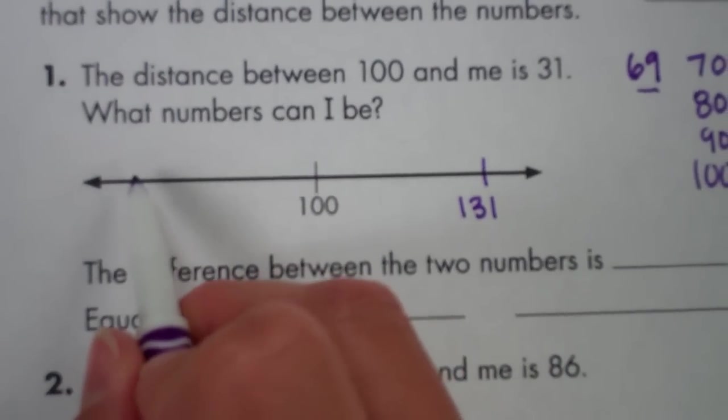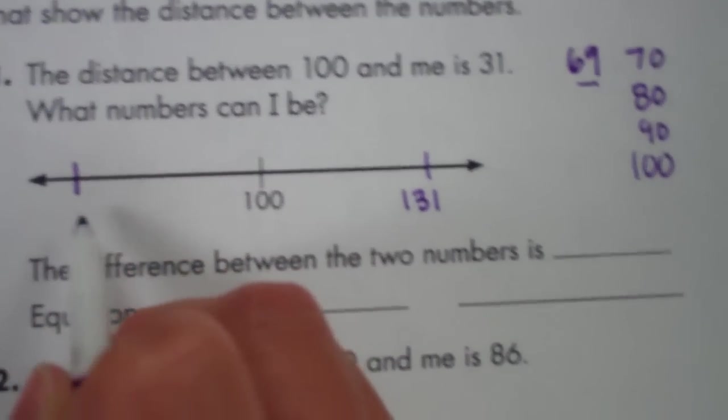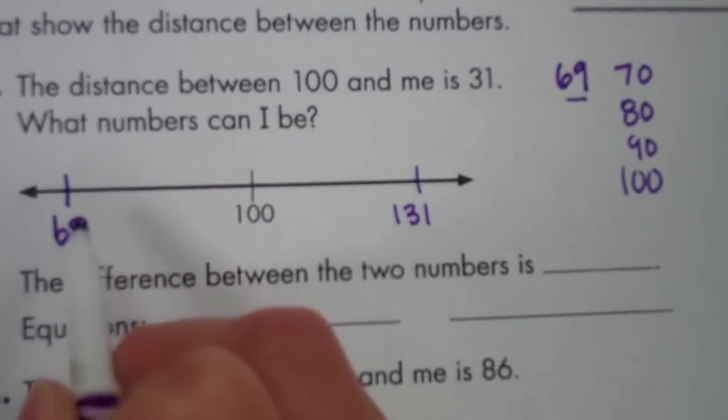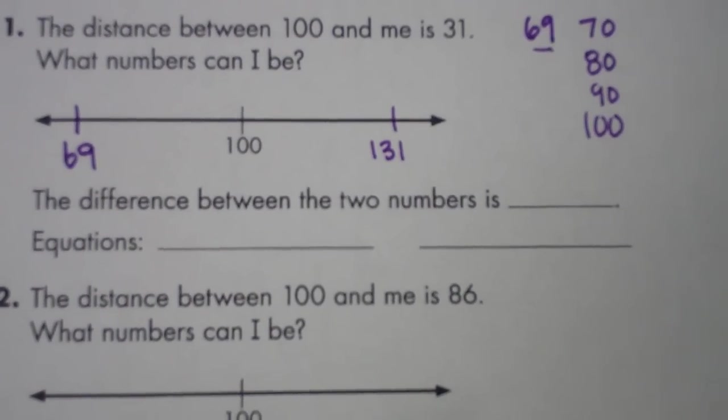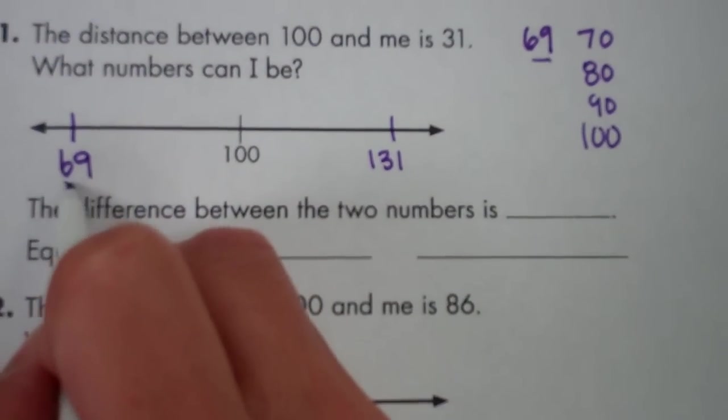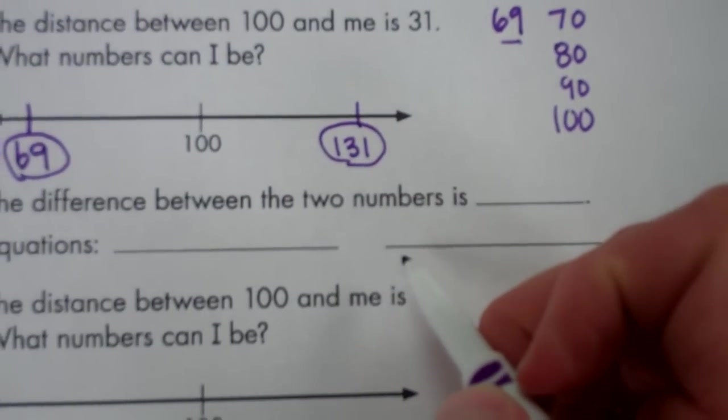That means on the number line, 31 away from 100 to the left will give us the answer, 69. So that answered the riddle, but then we had to figure out what the difference is between this number and this number.